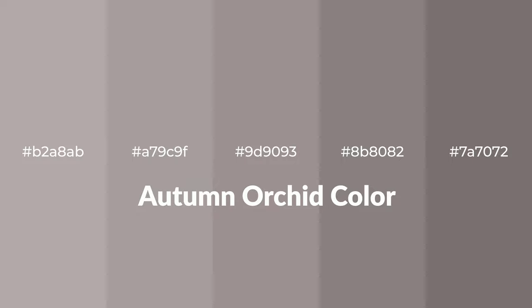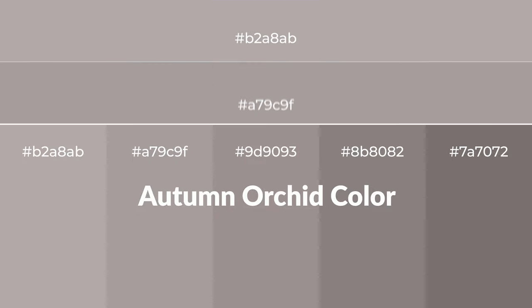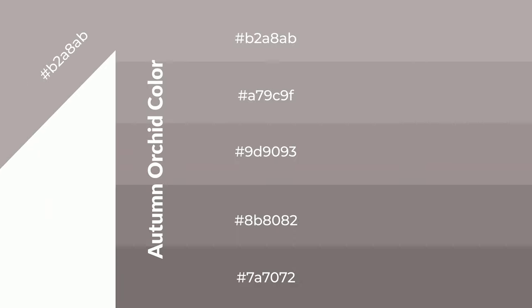Warm shades of autumn orchid color with gray hue for your next project. To generate tints of a color, we add white to the color — tints create light and exquisite emotions. To generate shades of a color, we add black to the color, and it is used in patterns, 3D effects, and layers. Shades create depth and drama.